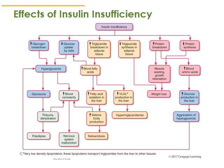Glycosuria promotes polyuria and dehydration. When you have glycosuria you urinate more, and your body responds with polydipsia — excessive thirst. Polyuria and hyperglycemia contribute to an increase in blood osmolarity, which can damage the nervous system and result in nervous system malfunction. One consequence is damage to sensitive eye tissue from exposure to increased blood osmolarity.